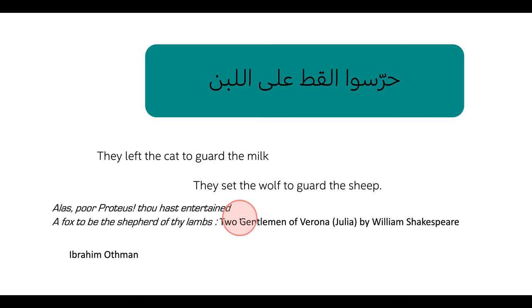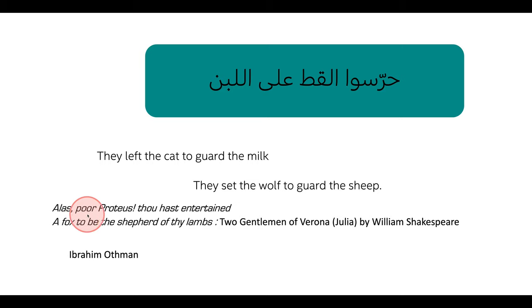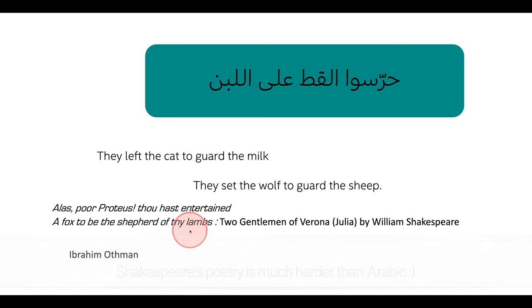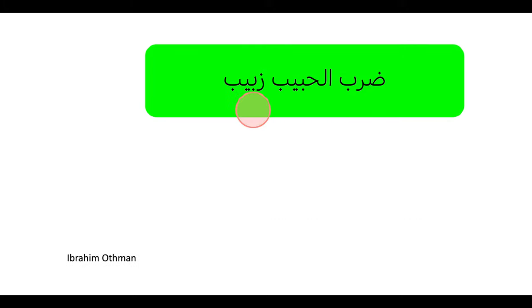Similarly, we have it with William Shakespeare in The Two Gentlemen of Verona, where he says: 'Thou hast entertained a fox to be the shepherd of thy lambs.' And in Arabic we say حرّسوا الأط على اللبن.